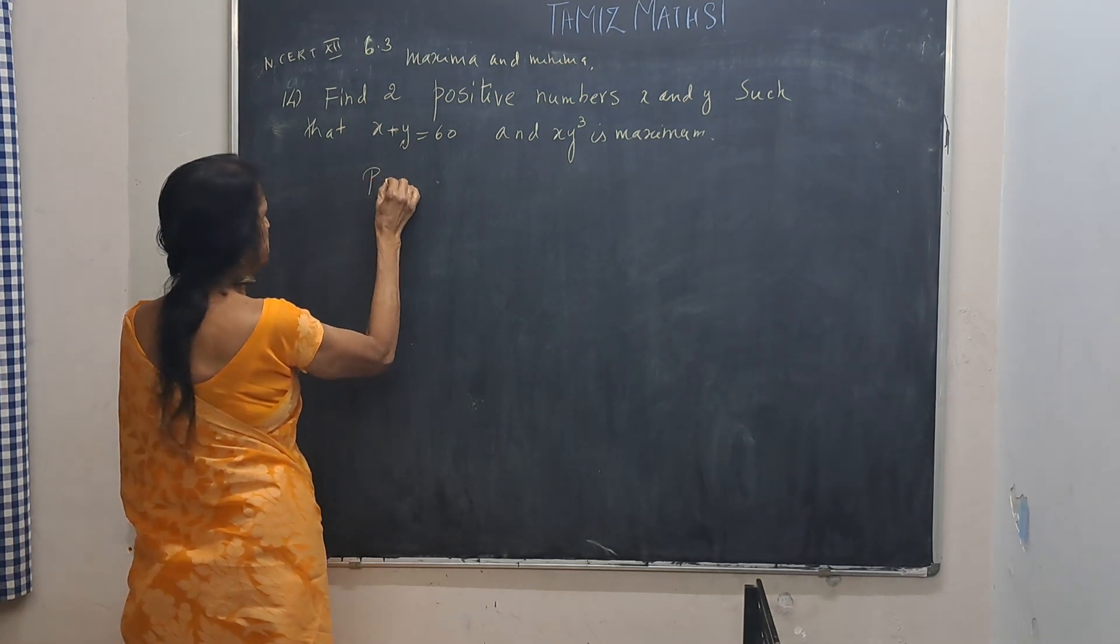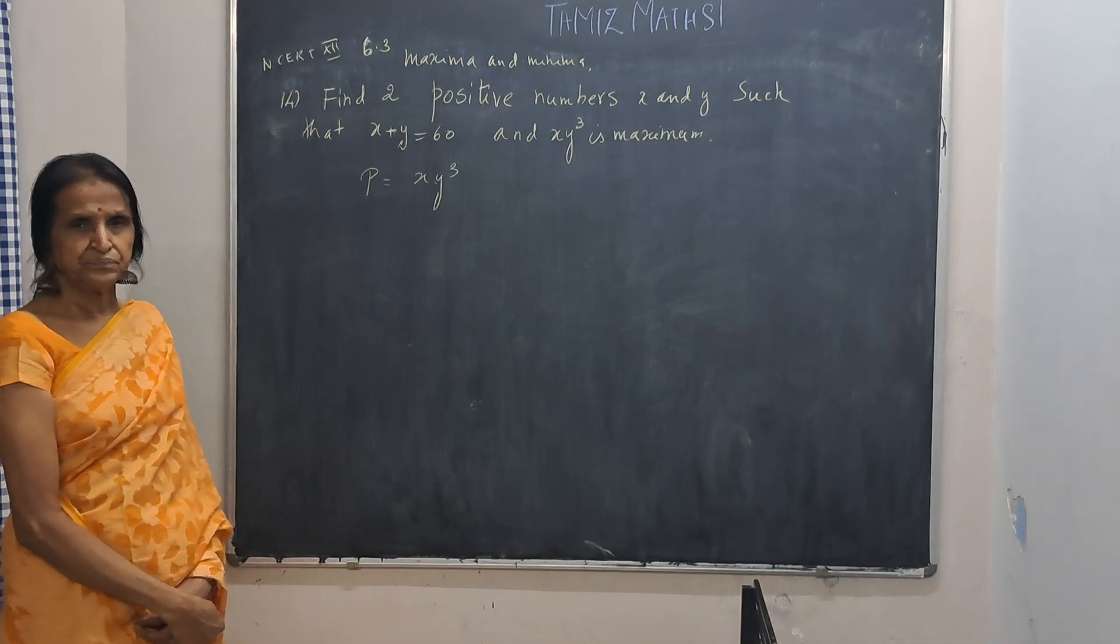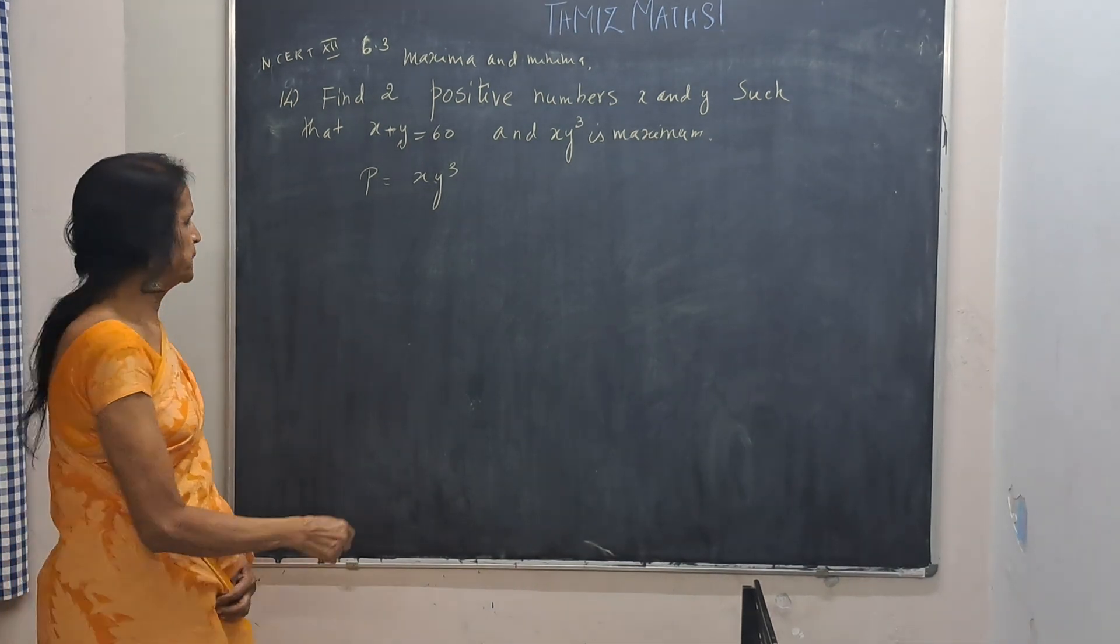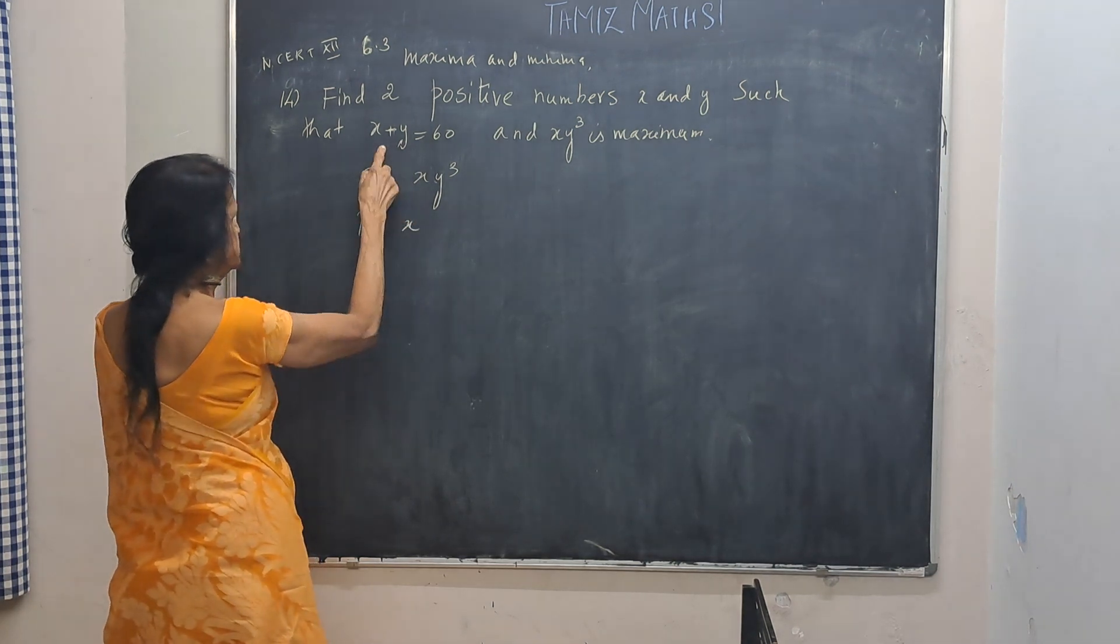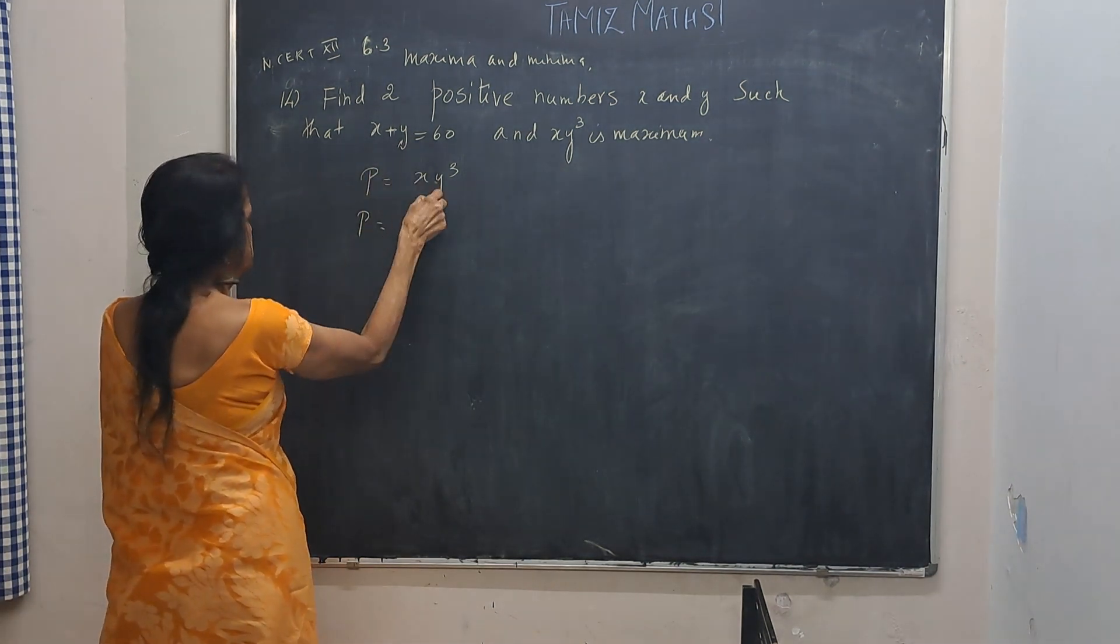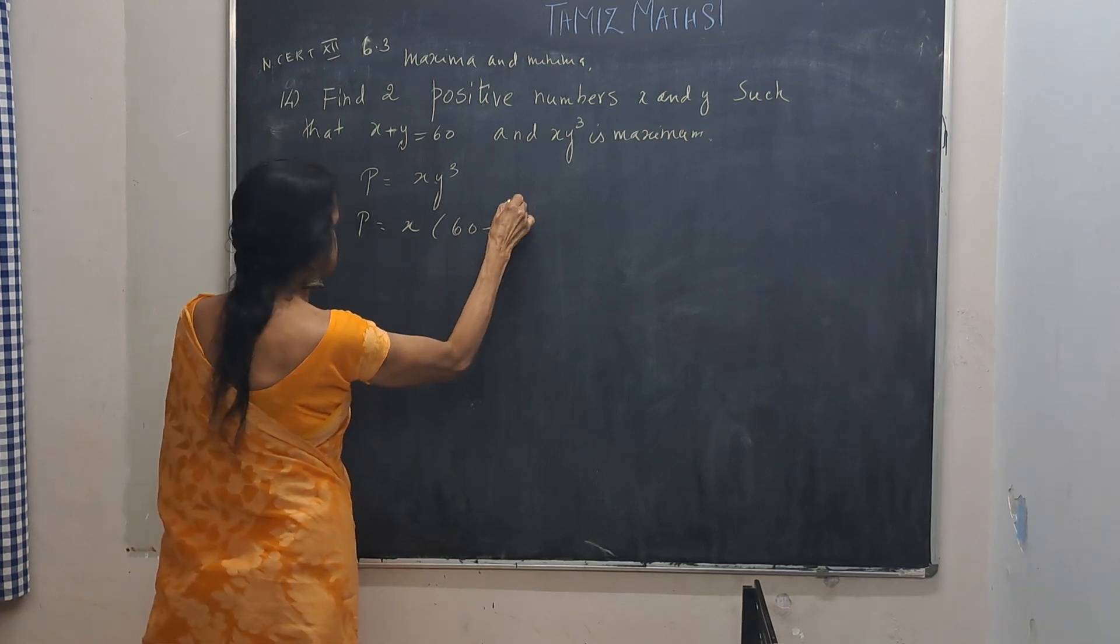Let P be equal to x y cube. Anything you take, whatever you like. Now I want maximum of P. X plus y is 60, so y is 60 minus x.